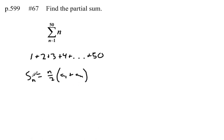So in this case, we're looking for the sum of the first 50 terms. So the sum of the first 50 terms equals n, the term number, which is 50 divided by 2, times a sub 1, which is the first term, plus a sub n, which is the 50th term.